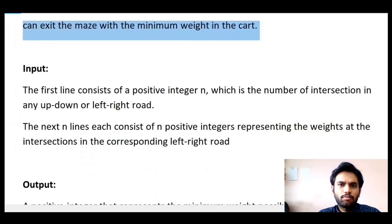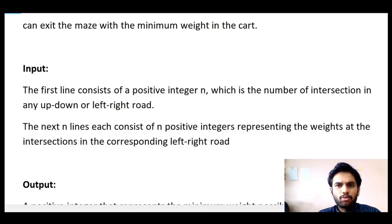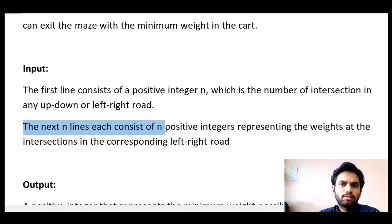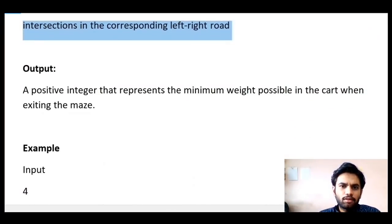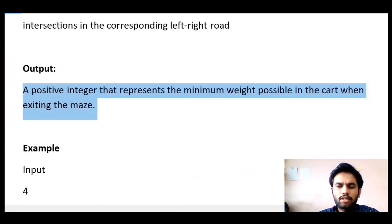The first line of input consists of a positive integer n, which is the number of intersections in any up-down or left-right road. The next n lines each consist of n positive integers representing the weights at the intersections in the corresponding left-right road — so input is given in a matrix format. Output is a positive integer representing the minimum weight possible in the cart when exiting the maze.